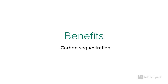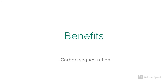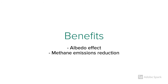Carbon sequestration: grasses are able to sequester a large amount of carbon in their root systems. We are unsure if they do it better than shrubs, but because of their large ground cover, they probably sequester more carbon overall. Albedo effect: since grasslands tend to be lighter in color than the tundra ecosystem, they reflect more light back into space. Since the ground does not absorb this heat, it can stay cooler, helping prevent the thawing of permafrost.